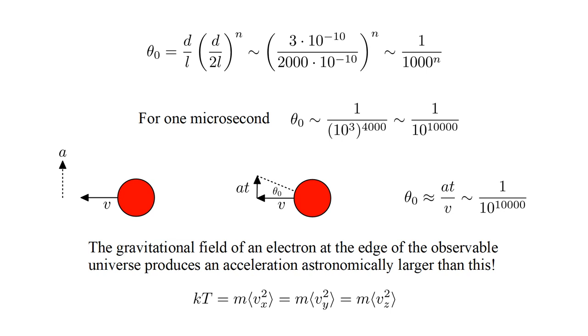This is a simple example of what came to be known as statistical mechanics, using the laws of physics not to precisely describe the individual motion of each molecule, but only to determine their overall statistics. We will consider statistical mechanics in a future video.